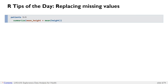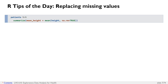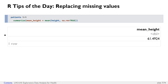If we type patients then summarize mean height equals mean(height), will we get what we want? The answer is no, because you can't calculate a mean when you have missing values involved. R reminds you that if there are missing values and you're about to summarize them using mean, median, or any other summary function, you have to specify what to do with the missing values. The easiest fix is to tell the mean function to remove those missing values before calculating, using na.rm=TRUE. And now we get a mean height of approximately 61.